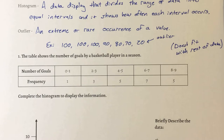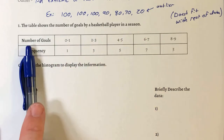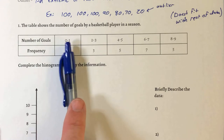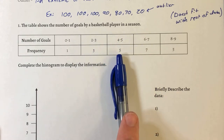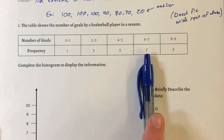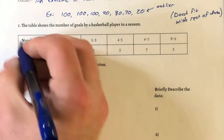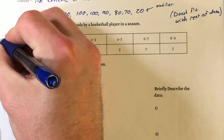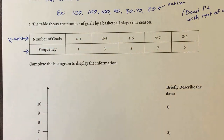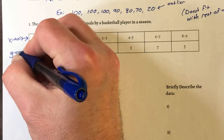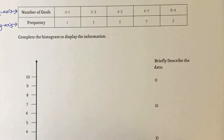Our first example: the table shows the number of goals by a basketball player in a season. We have their number of goals — they made zero to one goal one time, two to three goals three times, four to five goals five times, six to seven goals seven times, and five times they made eight to nine goals. Our top row represents what we're going to place on the x-axis. The bottom row, our frequency — which is how often something happens — is going to be represented on our y-axis. Our task is to complete the histogram to display this information.